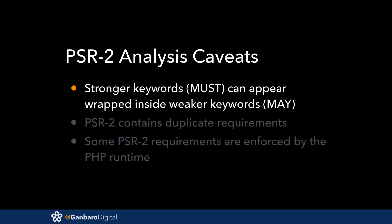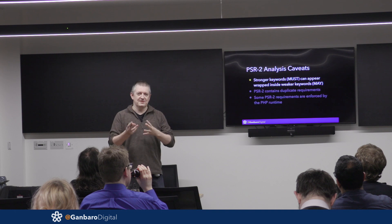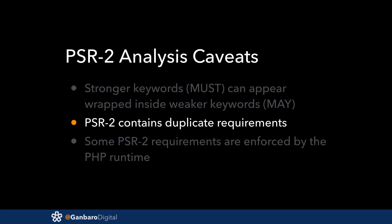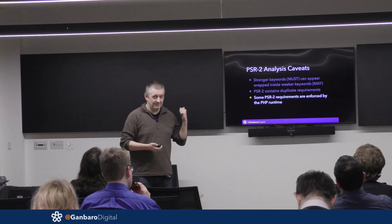I want to share some important caveats about my methodology, as some people may do their own analysis and come up with slightly different results. Not all 'must' requirements are of equal weight — sometimes PSR2 will say a thing is optional, but if you want to do it you must do it this way. I have counted those as 'must' and haven't watered them down. PSR2 also currently contains duplicates, and some are redundant — actually enforced by the PHP interpreter. I have not removed those from my figures; it's a straight count.